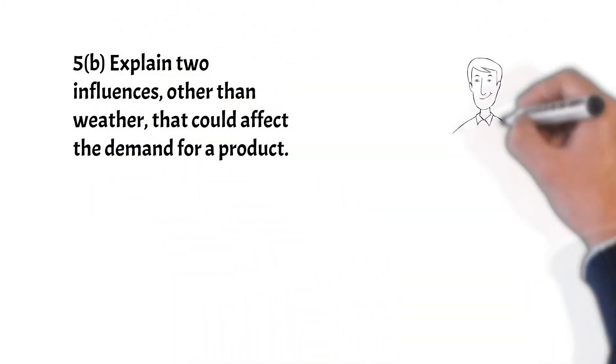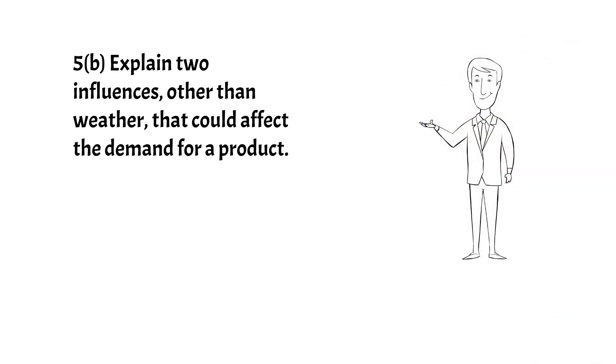Next, question 5 part b: explain two influences other than weather that could affect the demand for a product. Market, pick any two of these. Price of substitutes—if the price of substitutes increases, demand for the product will increase or vice versa. Price of complements—if the price of complements increases, demand for the product will decrease or vice versa. Expected future prices—if the price is expected to increase in the future, demand for the product will increase now. Advertising—if there is a successful advertising campaign, demand will increase. Income—if income increases, demand will increase for a normal good or vice versa. Change in price—if price increases, demand will contract.